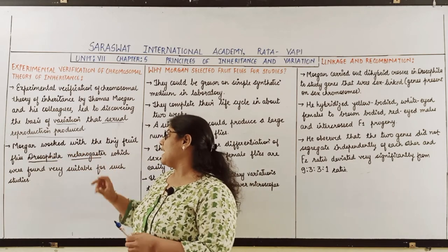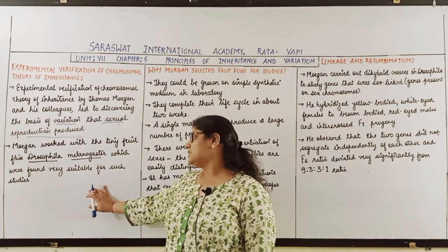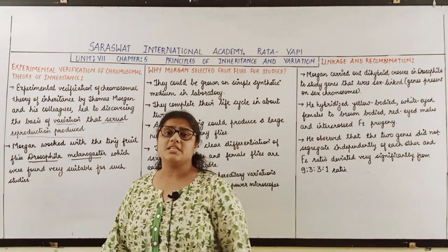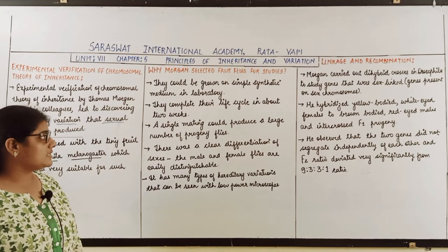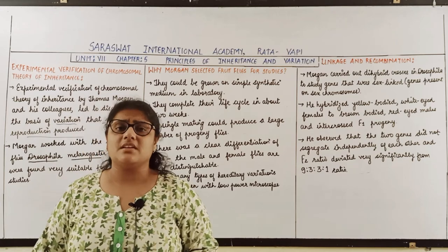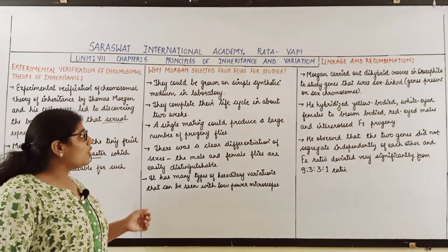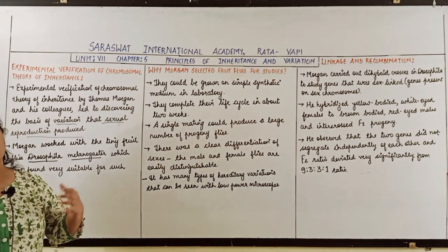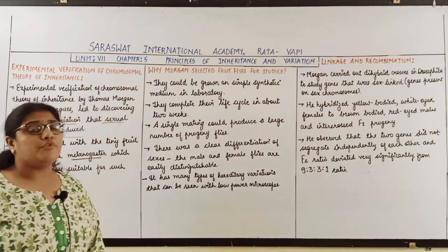Morgan worked with tiny fruit flies called Drosophila melanogaster, which were found very suitable for such studies. Their study material was a fruit fly whose scientific name is Drosophila melanogaster. Just as Mendel selected pea plants for certain reasons, Morgan selected the fruit fly and not other organisms for his studies.